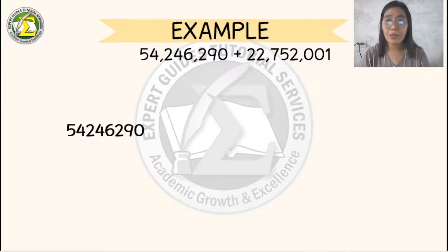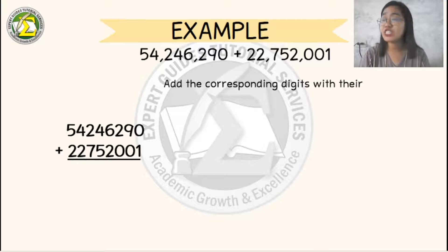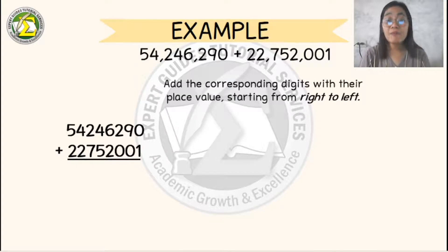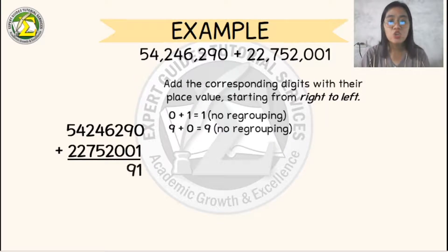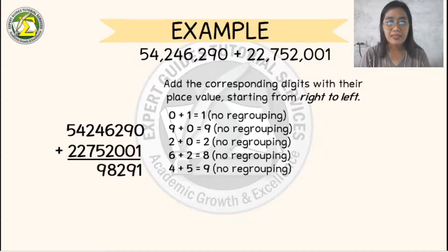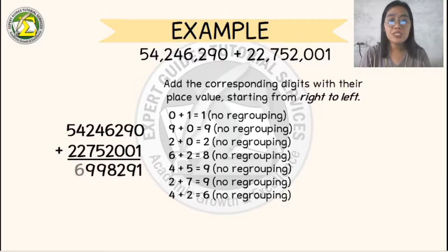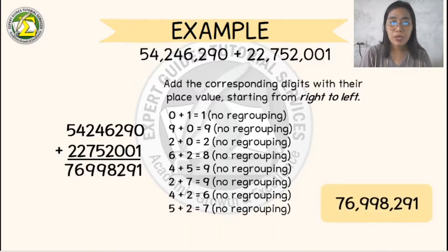Let's take another example. If we have 54,246,290 plus 22,752,001, what will be the sum? So let's add the corresponding digits with their place value starting from right to left. So 0 plus 1 is 1, 9 plus 0 is 9, 2 plus 0 is 2, 6 plus 2 is 8, 4 plus 5 is 9, 2 plus 7 is also 9, 4 plus 2 will become 6, 5 plus 2 will become 7. So therefore, the sum or the total number of these 2 addends will become 76,998,291.